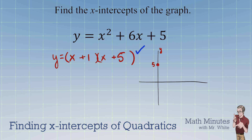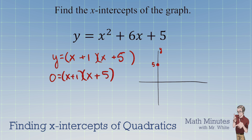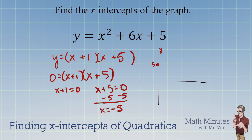Now we want to find when y equals 0, because x-intercepts always have the y-coordinate being 0. So we set the factored form equal to 0. You set each factor to 0 separately and solve the simple equations. That gives us x equals negative 5 and x equals negative 1 as the x-intercepts of this graph.